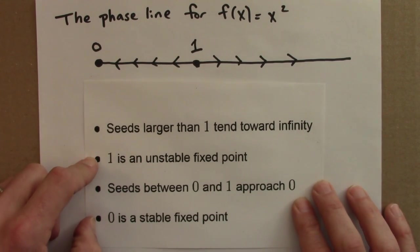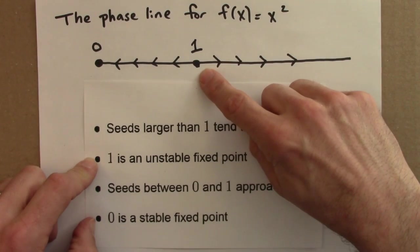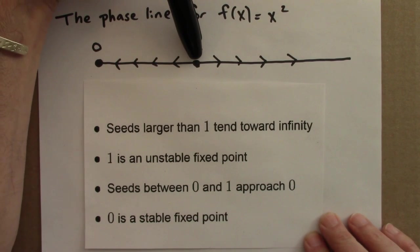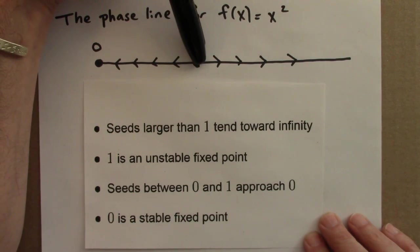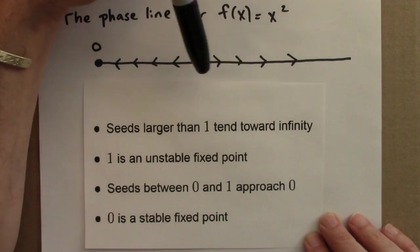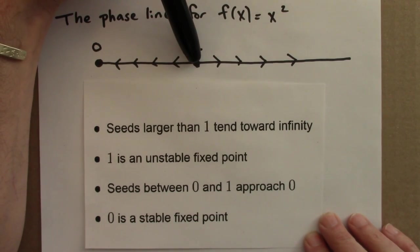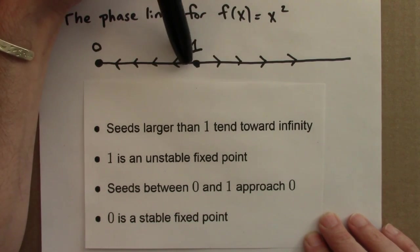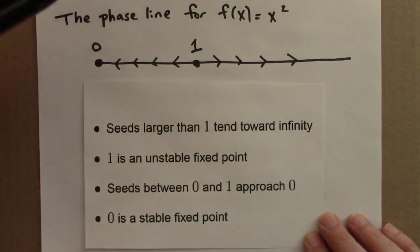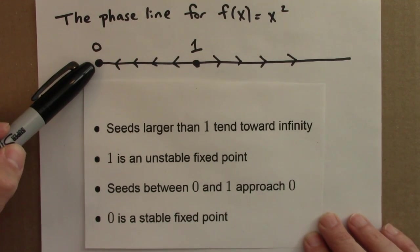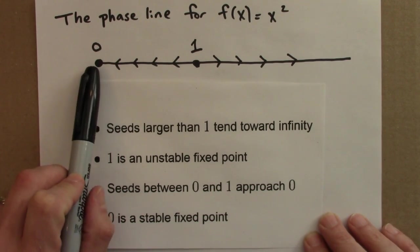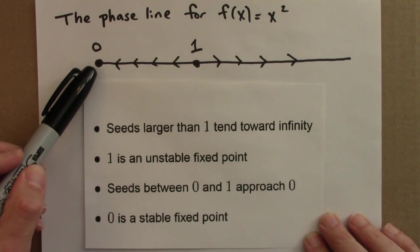1 and 0 are fixed points, but there are different types. 1 is an unstable fixed point — unstable because if you're at 1 and you move a little bit to the left or to the right, you don't return; you get pushed away. It's like being perched on top of a hill — a little push and you roll down in either direction. In contrast, 0 is a stable fixed point: if you're at 0 and move a little bit to the right, you get pushed right back to 0.